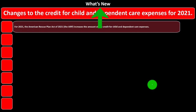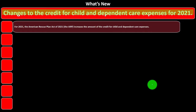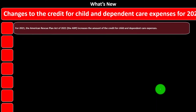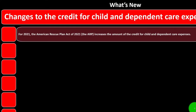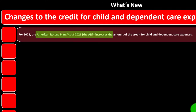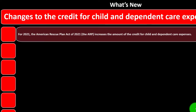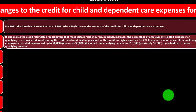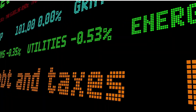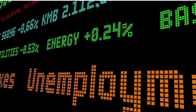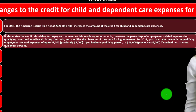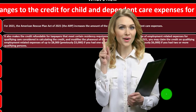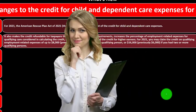What's new? For 2021, the American Rescue Plan Act of 2021 — the ARP — increases the amount of the credit for Child and Dependent Care Expenses. That's generally a good thing. Software helps us calculate these items, but we want to understand them so we can help plan and budget.